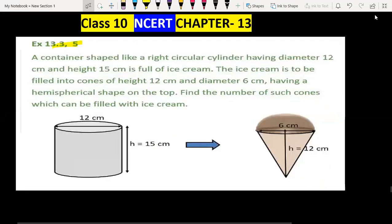Hello students, welcome to Vita Institute. Class 10, Chapter 13, Exercise 13.3, question 5. A container shaped like a right circular cylinder having diameter 12 cm and height 15 cm is full of ice cream.